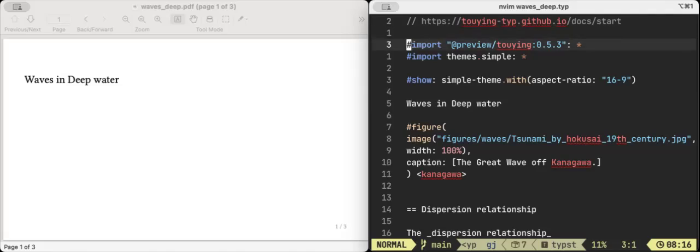This is importing a package called Touying, maybe Touying. I'm using the simple theme. I just copied this. I don't know what other themes there are. There was a kind of a funny verb, but I get that it means set, basically like set. It's just the aspect ratio, which I assume is good.